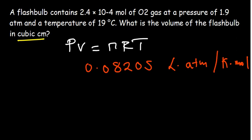We've been given the number of moles, we've been given the pressure in atm already. We just have to convert the temperature to Kelvin by adding 273 to the 19. So 273 plus 19 is 292 Kelvin.